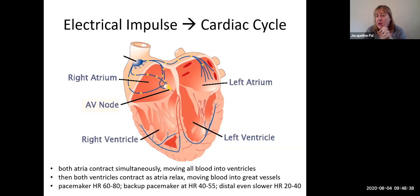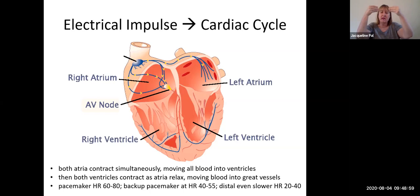As opposed to the path, if you were a red blood cell, of going from the right atrium to the tricuspid valve, to the right ventricle, to the lungs coming back, the left atrium to the mitral valve, to the left ventricle, out through the aortic valve — that's not how the heart contracts. It doesn't do right atrium, then right ventricle, then left atrium, then left ventricle.